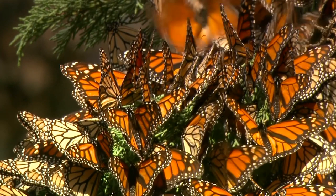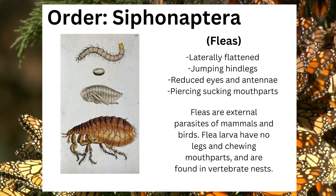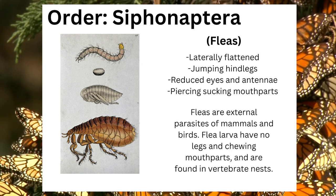Insects in the order Siphonaptera, commonly known as fleas, can be identified by their laterally flattened bodies, their jumping hindlegs, their reduced eyes and antennae, and their piercing-sucking mouthparts. Fleas are external parasites of mammals and birds. Flea larvae have no legs but do possess chewing mouthparts and are commonly found in vertebrate nests.